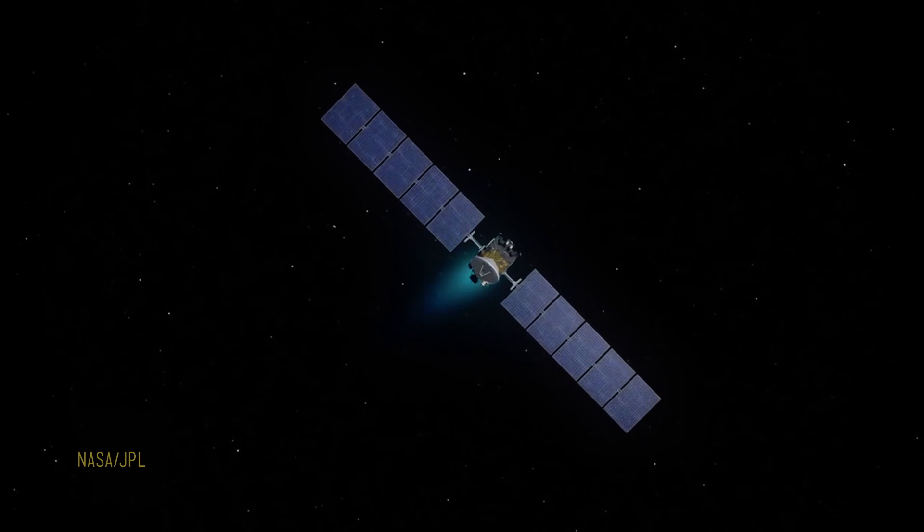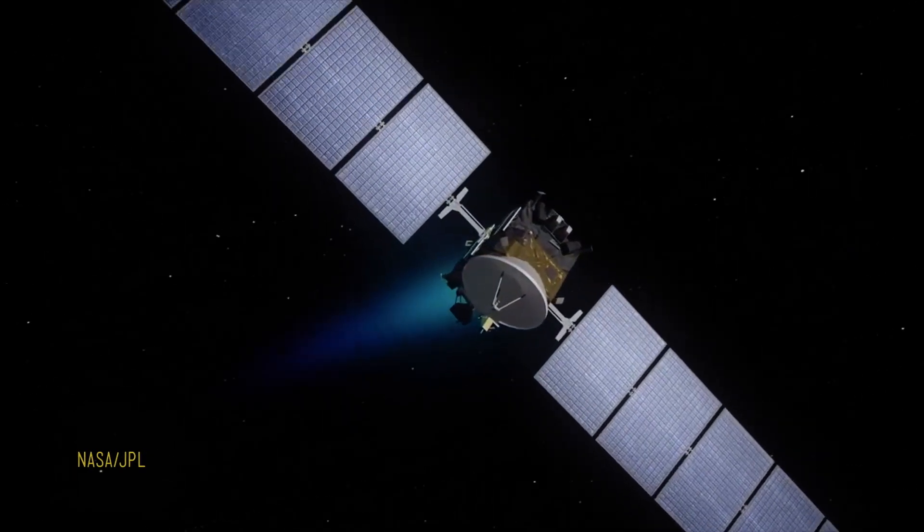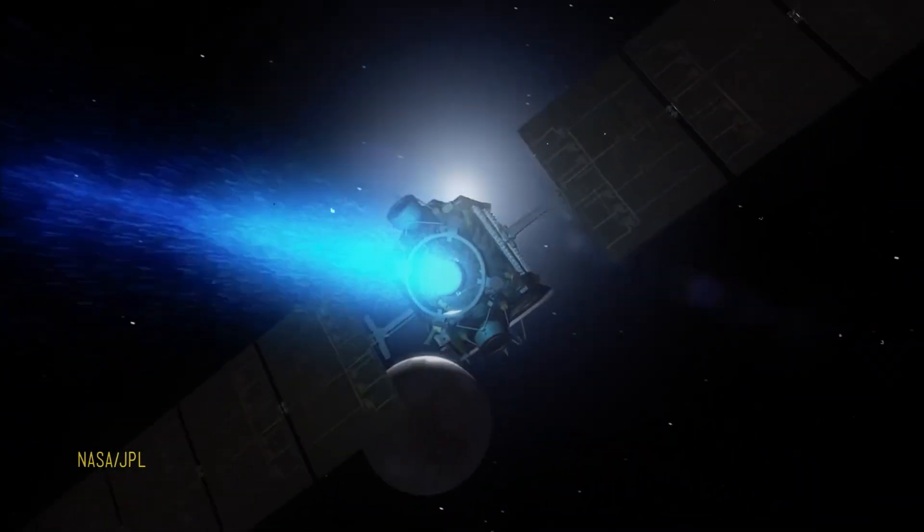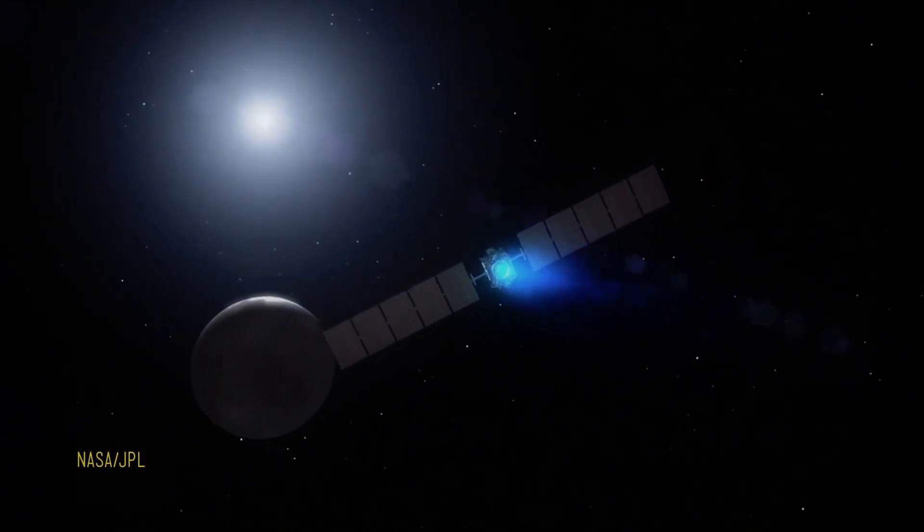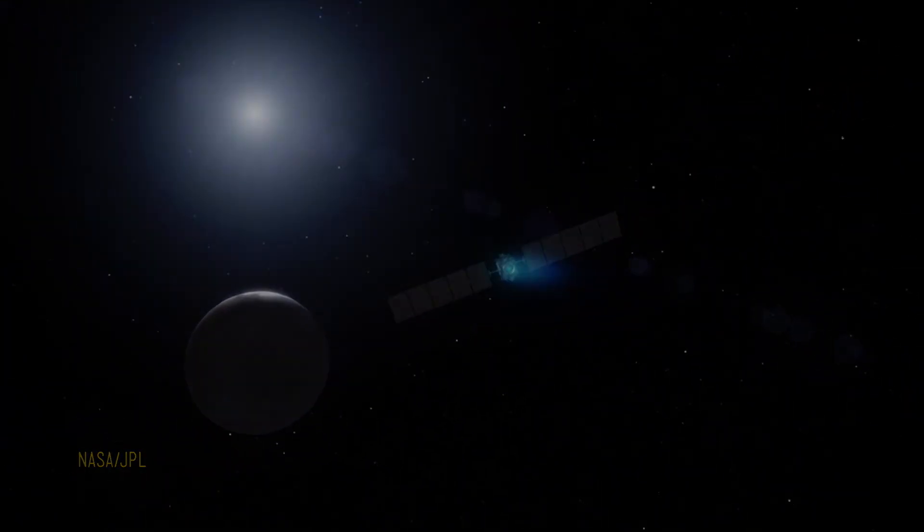The plasma rockets researched at the University of Surrey and their collaborators are a new method to propel satellites in space, pushing spacecraft to explore further into the solar system.